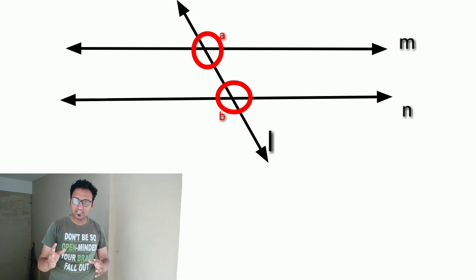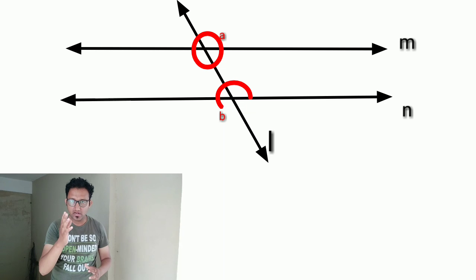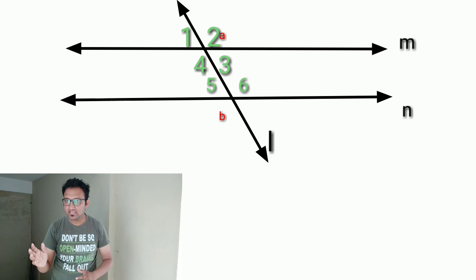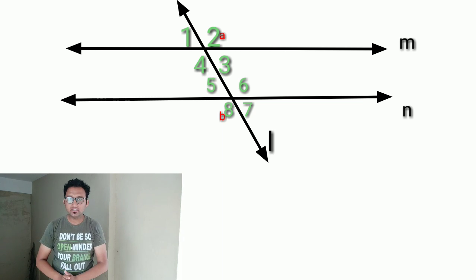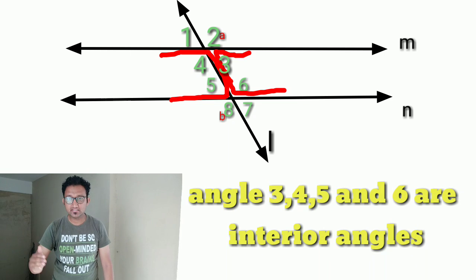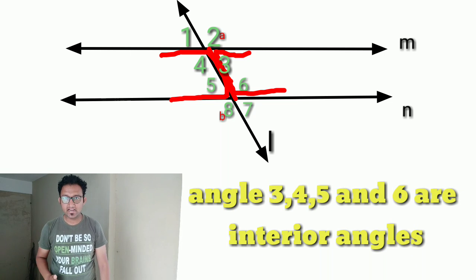Angle 1, angle 2, angle 3, angle 4, angle 5, angle 6, angle 7, and angle 8. Angle 3, angle 4, angle 5, and angle 6 are called interior angles.